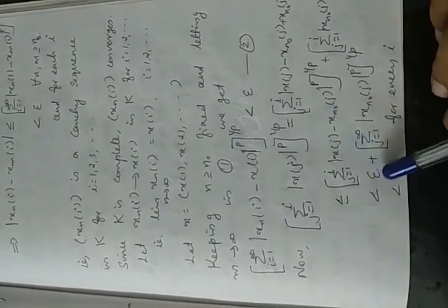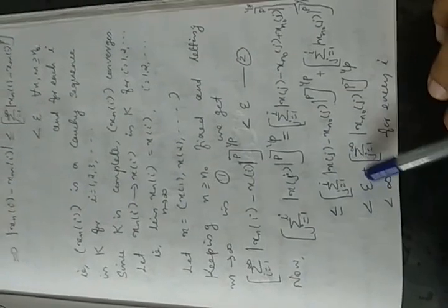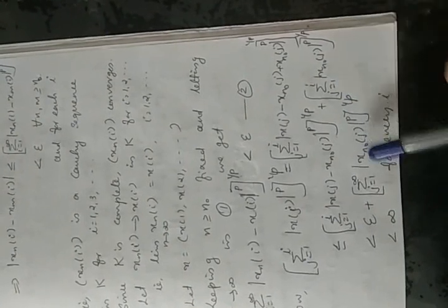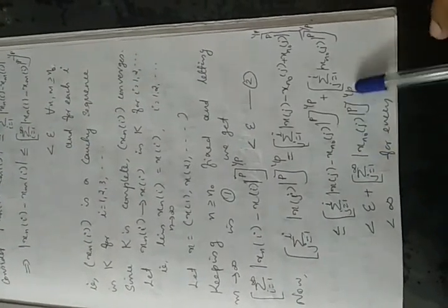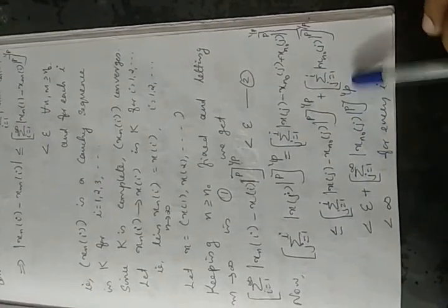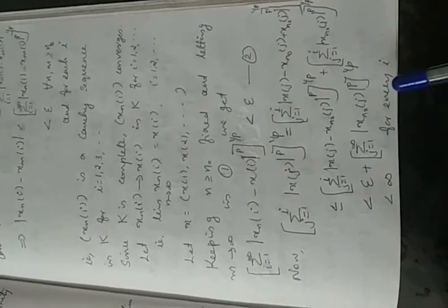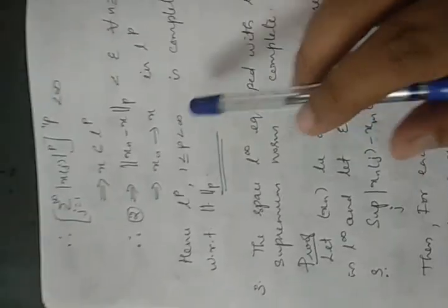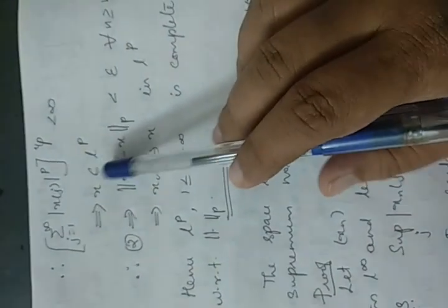The second term (Σ_{j=1}^{i} |Xn₀(j)|^p)^{1/p} is a finite sum, which is less than or equal to (Σ_{j=1}^∞ |Xn₀(j)|^p)^{1/p}, and this is finite because Xn₀ is an element of Lp. So its p-th root is also finite. We get a finite number, which proves that (Σ_{j=1}^{i} |X(j)|^p)^{1/p} is finite for every i, so (Σ_{j=1}^∞ |X(j)|^p)^{1/p} is also finite. By definition, X belongs to Lp.